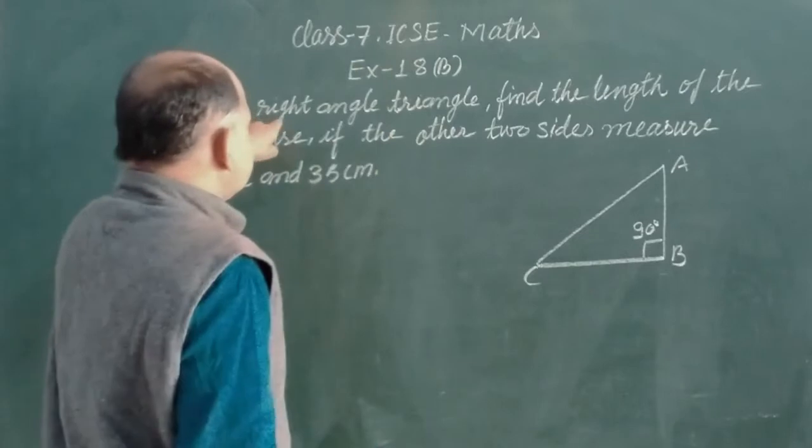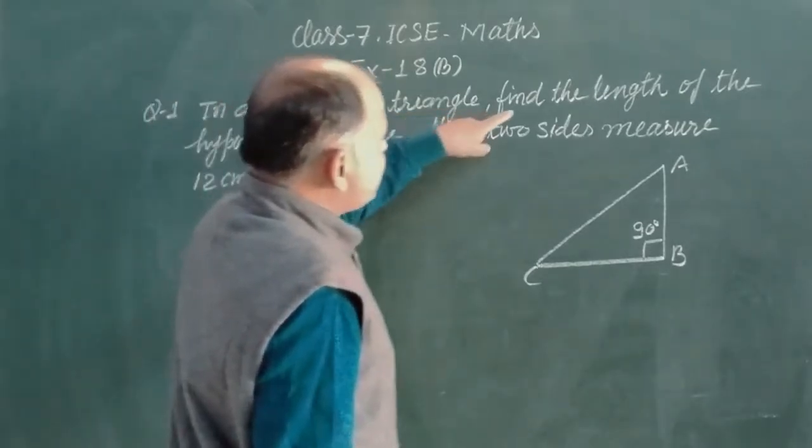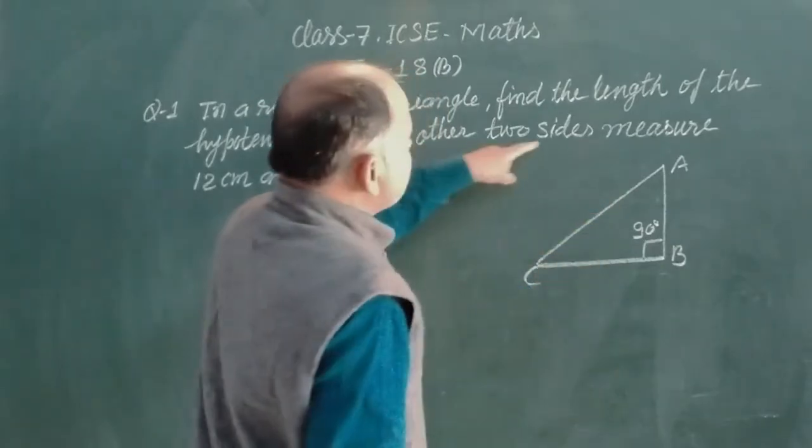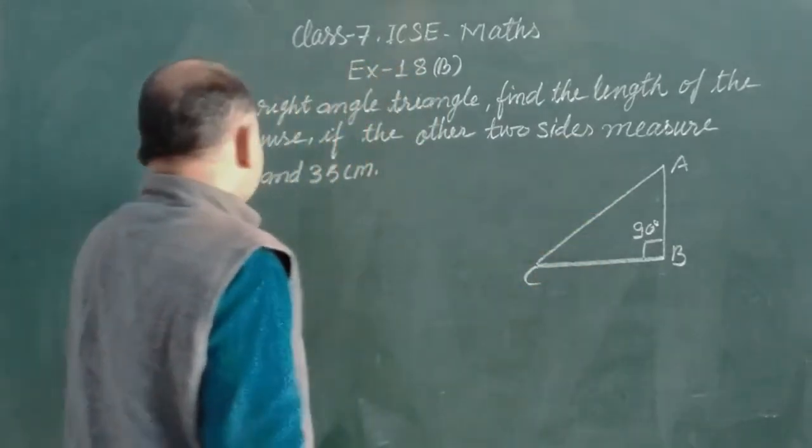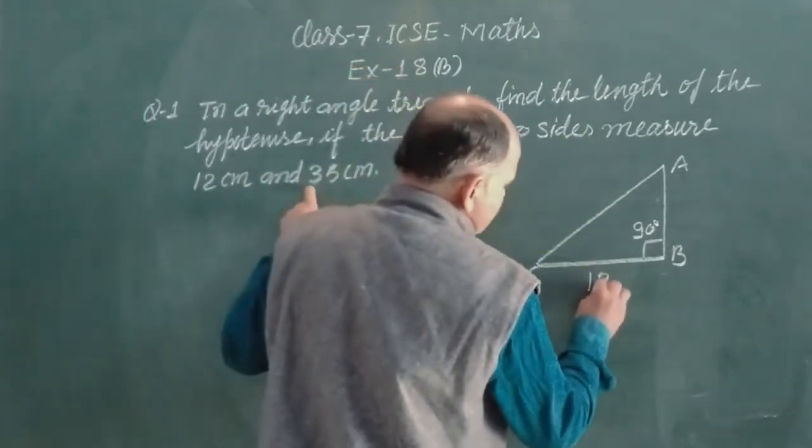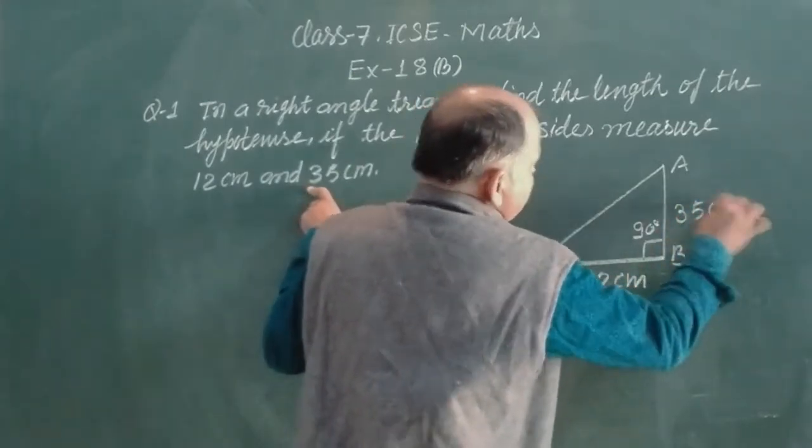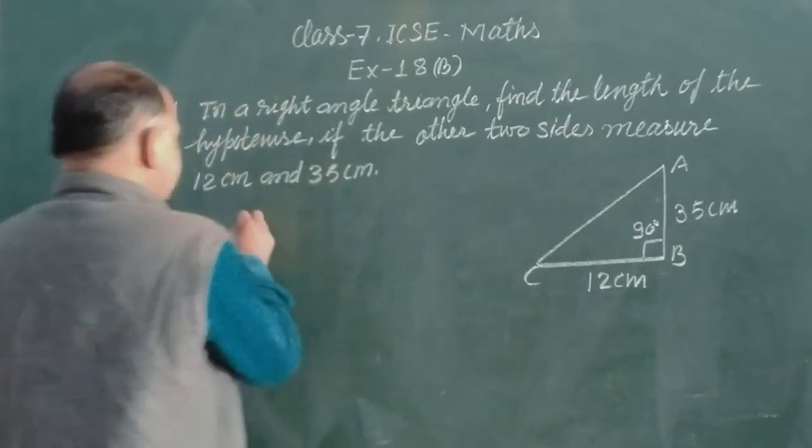So in a right angle triangle, find the length of the hypotenuse. This hypotenuse we find. Two sides are measured 12 cm and 35 cm. So this is 12 cm and this is 35 cm and we find AC.